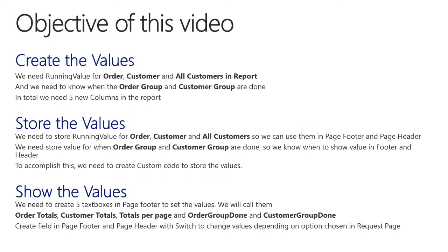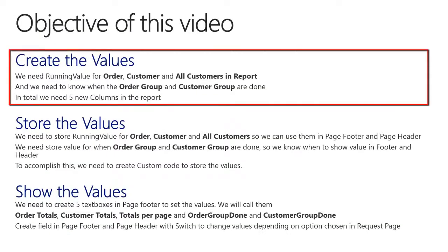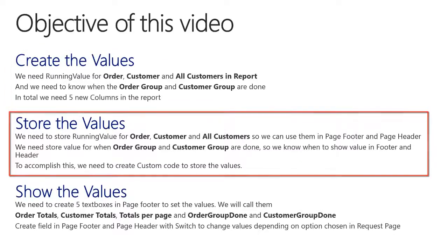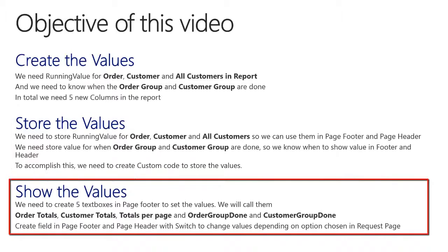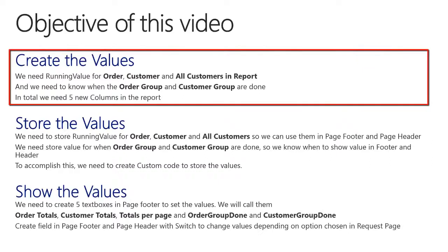The objective of this video is simple. We need to create the values used in the TransFooter and TransHeader, we need to store the values in variables, and we need to show the values in the PageFooter and the PageHeader of the report. For creating the values, we need the running value for the order, customer, and all customers in the report, and we need to know when the order group and the customer groups are done. In total, we need five new columns in the report to accomplish this.